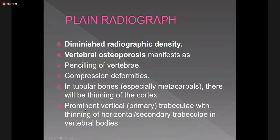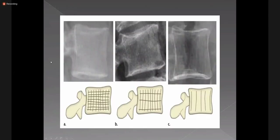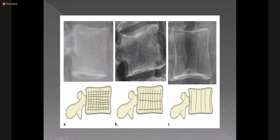There are two types of trabeculae in the vertebrae: primary and secondary. In osteoporosis, secondary trabeculae are resorbed and only vertical or primary trabeculae remain. As the disease progresses, only the vertical trabeculae are seen, giving a striated-like appearance.